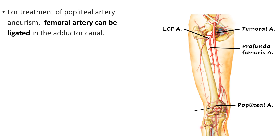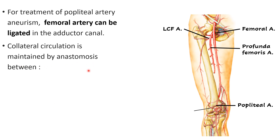However, blood supply to the leg and foot is maintained via collateral circulation — through the anastomosis around the knee joint. The collateral circulation is maintained by anastomosis between arteries that arise from above the ligation site and branches of the popliteal artery below. From above, the arteries must arise before the ligation of the femoral artery.